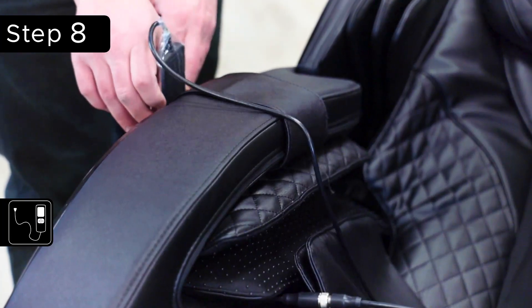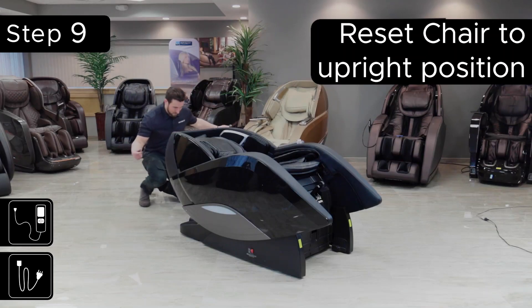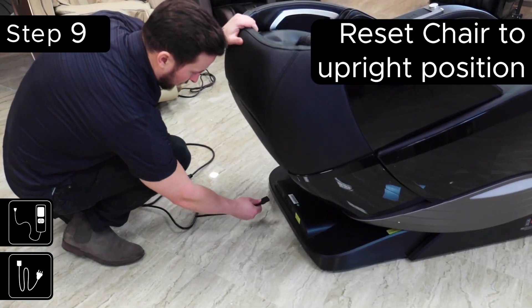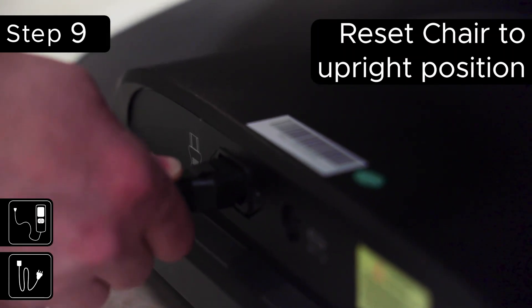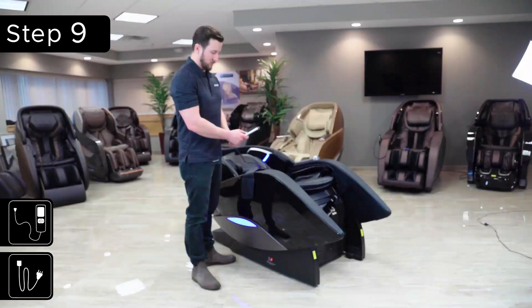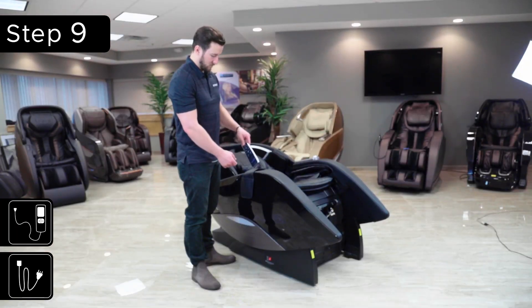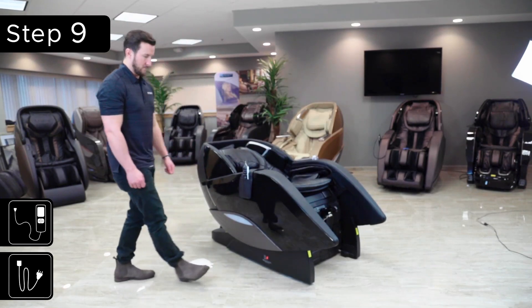Now that the arm is firmly attached to the chair and the remote is plugged in, get the power cord out of the accessory box and plug the chair in. There's a power switch on the side. Toggle it to the on position. This is indicated when it is lit up. Using the remote, turn the chair on and off again. This resets the chair to the upright position. Once the chair is fully upright, toggle the power switch off.